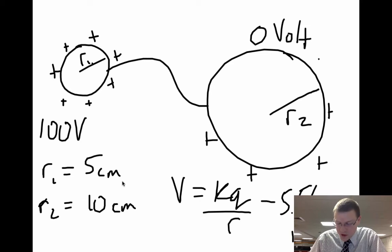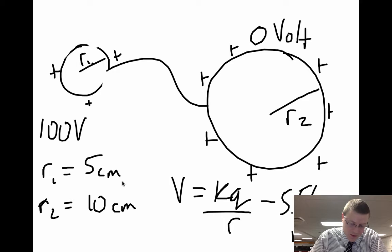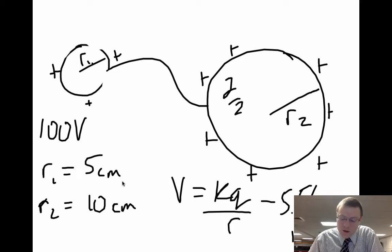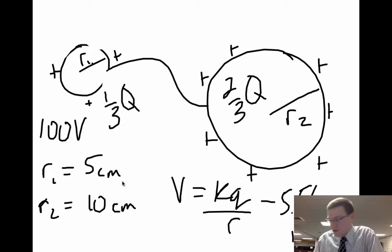You can see that sphere 2 is larger. So since it's larger, it's able to hold on to more charges than the first sphere and exactly 2 thirds of the total charge. While this holds on to 1 third of the total charge.